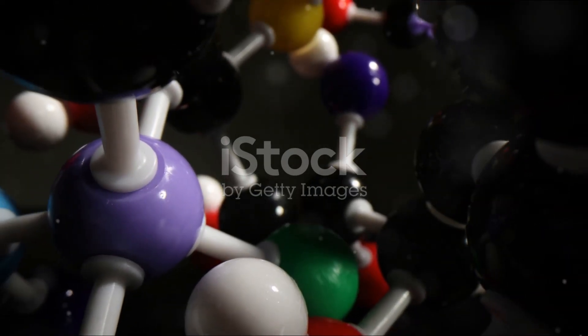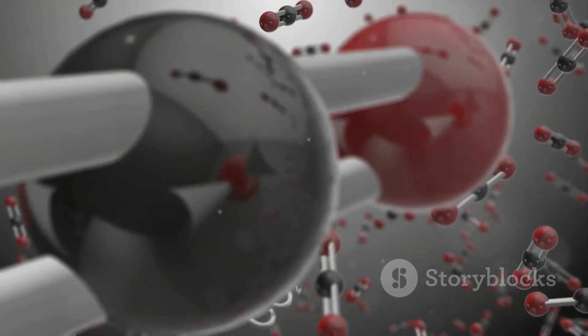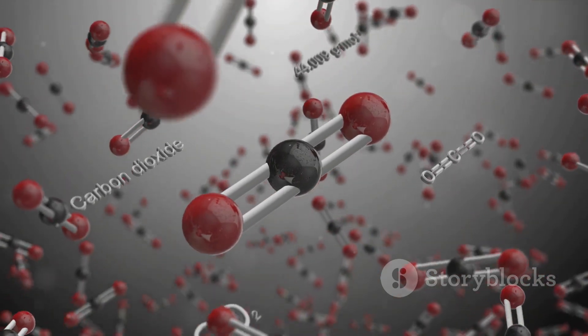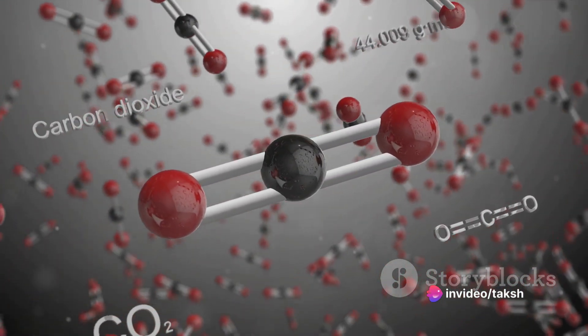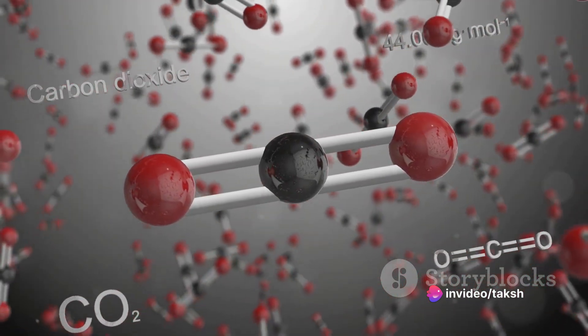In the world of organic compounds, hydrocarbons stand as the simplest form. They are composed of only two elements: carbon and hydrogen. Hydrocarbons are primarily categorized into three types: alkanes, alkenes, and alkynes.